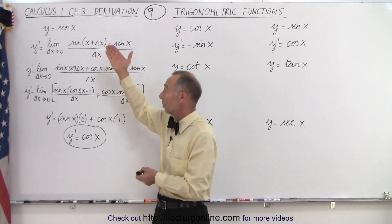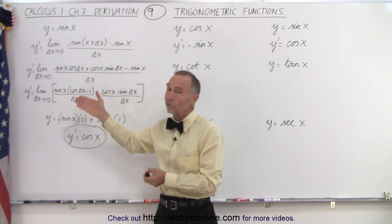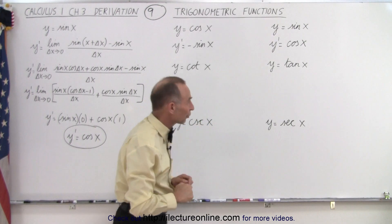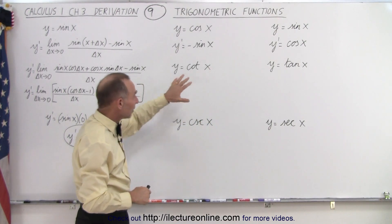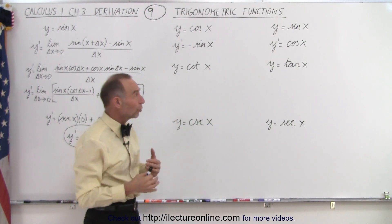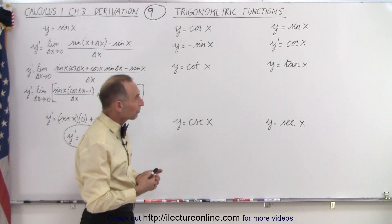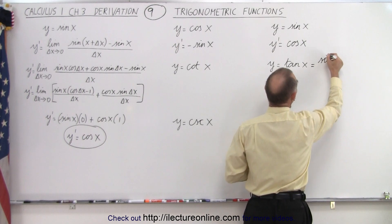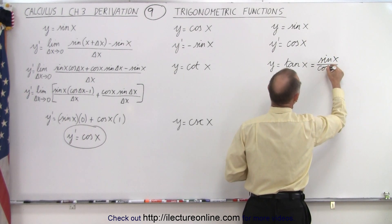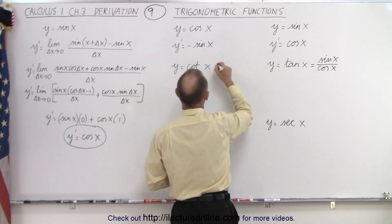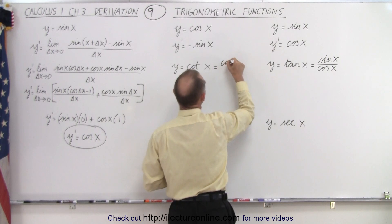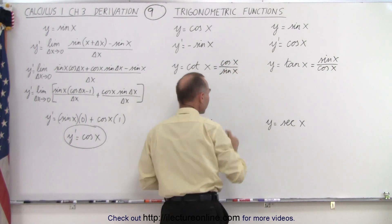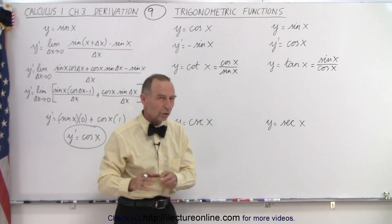And when we do it the other way around — starting with cosine of x and using the same principle — we get negative sine of x. So that's how we derive those first two. What about the next four? Well, we're going to apply the quotient rule, because we can write tangent of x as sine of x divided by cosine of x, and cotangent of x can be written as cosine of x divided by sine of x. So now we have a quotient, so we use the quotient rule.